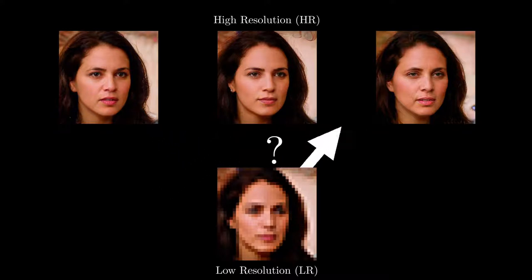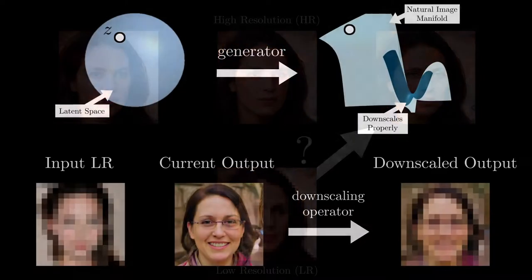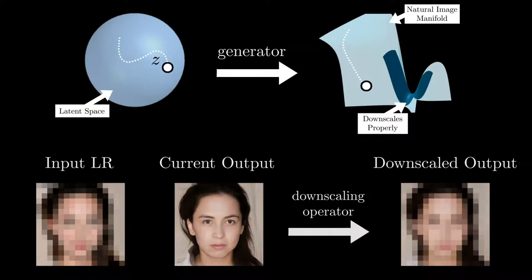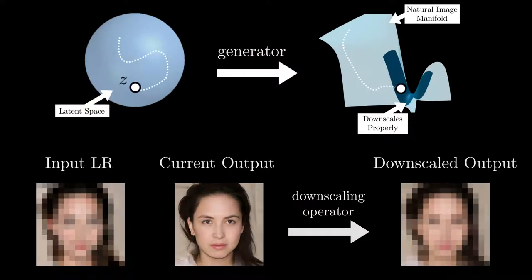Pulse is different because it only seeks to recover one of these potential HR images and can therefore confidently fill in details. Pulse walks along the manifold of realistic HR images, parametrized by a GAN, trying to find HR images that downsample to the LR image we started with.